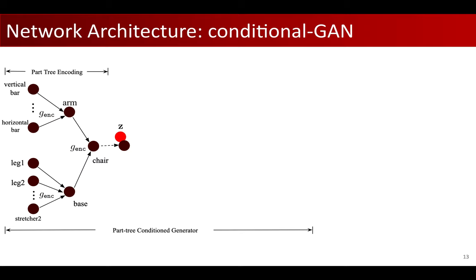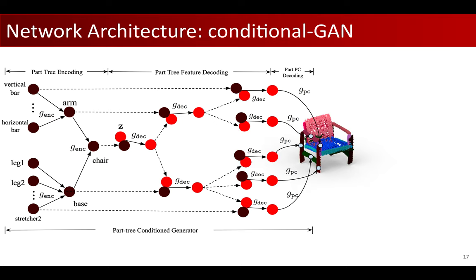Then, given a random variable Z indexing a certain geometric feature for the shape to generate, a part tree feature decoder combines the structural contents and the geometric feature together and propagates in a top-down manner to the children parts. We repeat this process until reaching the leaf node. At the leaf node, we finally use a point cloud decoder to produce part point clouds at the leaf level, which are finally assembled together for the final shape geometry.